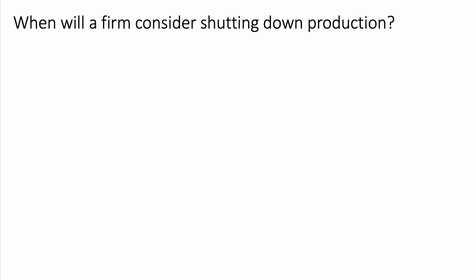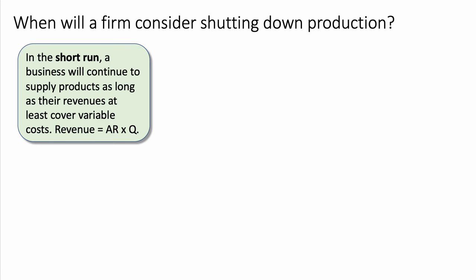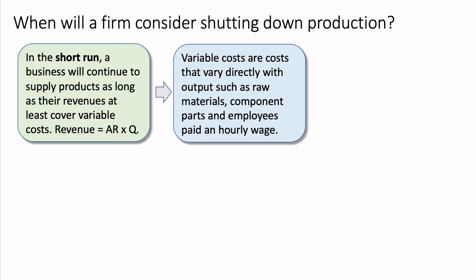The shutdown price refers to the conditions and price where a firm will decide to stop producing, given that fixed costs have to be paid anyway. In the short run - a period of time when there's at least one fixed factor - a business will continue to supply products as long as revenues at least cover variable costs. Variable costs are the costs that vary directly with output; good examples include raw materials, component parts, and hourly wage costs.